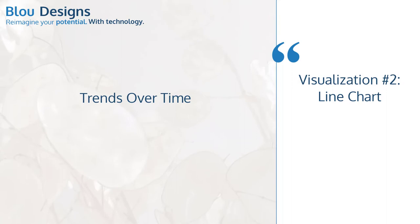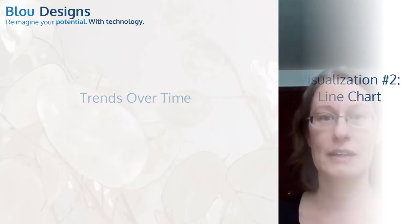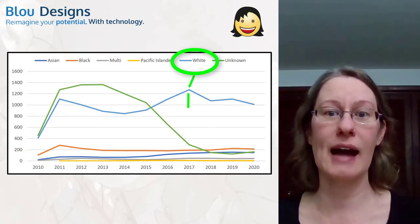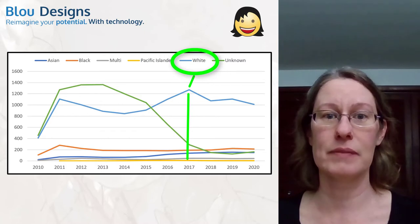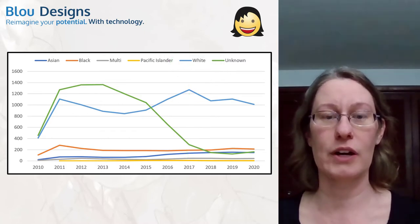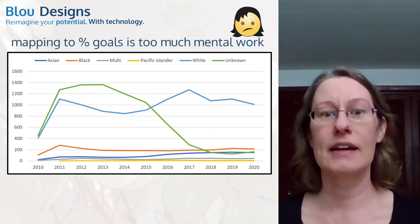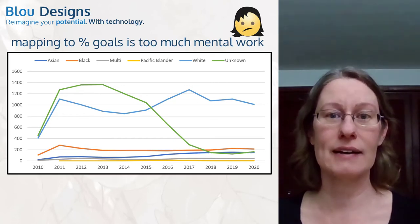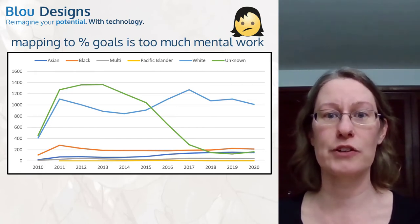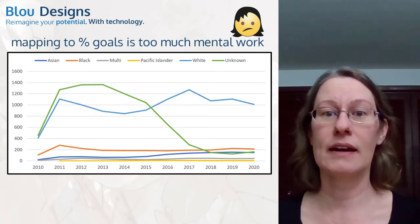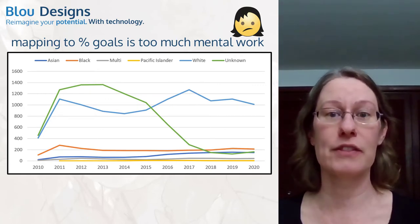A line chart is the standard go-to for trends over time. Each line represents a racial category with each data point showing the count of employees at that time. This chart gives you the history you're looking for but isn't very impactful. It requires a lot of mental work to figure out how these trends translate in terms of your percentage goals — are you on track, maintaining, trending away? Figuring this out is mental work you should be reserving for figuring out what to do about where you're at and how you're trending, not figuring out where you're at in the first place.